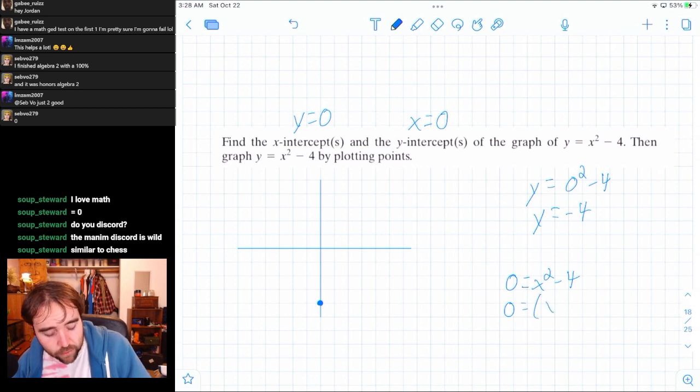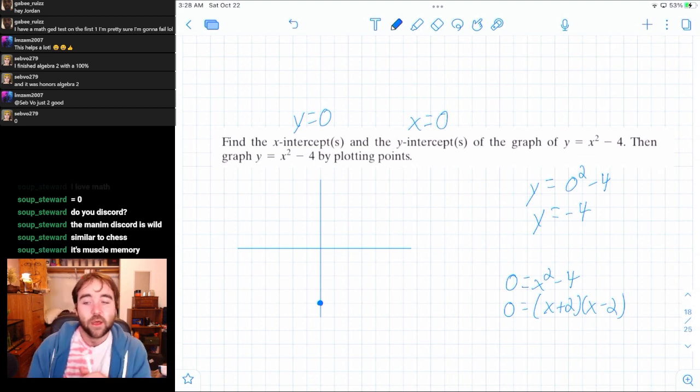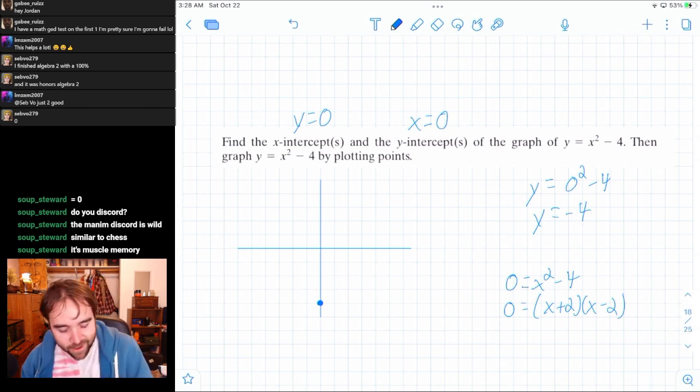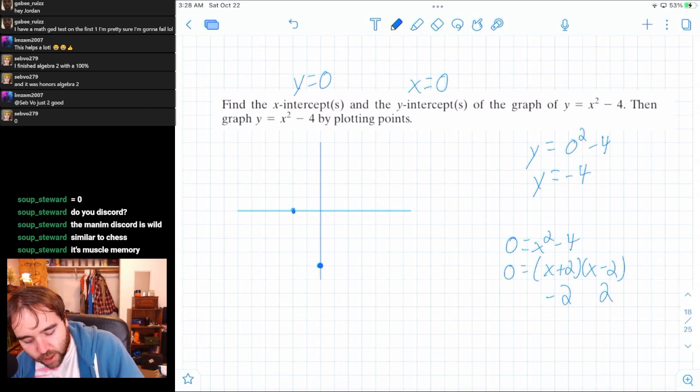It's got to come up again because it comes up all the time. Difference of two squares. If you got x squared minus four, x plus two, x minus two. That's got to be muscle memory, just like soup Stewart said. And then you can just solve for x. You got negative two and two. And so those are going to be the x values of the x-intercepts.